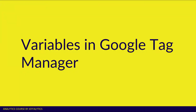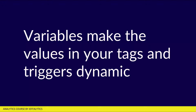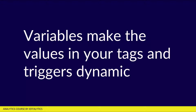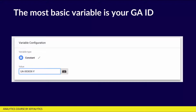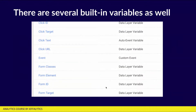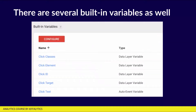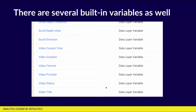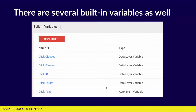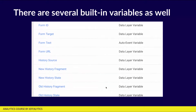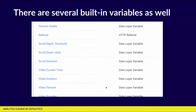The third part of the triangle with Google Tag Manager is variables. Variables are what make the values in your tags and your triggers dynamic, and dynamic variables are needed if you want to scale your tag management. The most basic variable you have is for your Google Analytics ID — you can create a constant and assign it the value of your Google Analytics UA ID, and that's going to be with you forever. There are also several built-in variables in your GTM account, covering scrolling, videos, and clicks. Basically anything that happens within a page of your website, there's a variable you can use for it, and those variables allow you to pull in dynamic values that you can assign to your various tags.